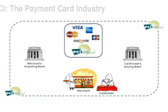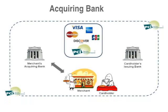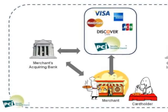To accept payment cards, the merchant signs an agreement with their bank, called the Acquiring Bank, to comply with the regulations of the bank and card brands. The merchant's Acquiring Bank agrees to comply with the regulations of the card brands, including the PCI data security standards.